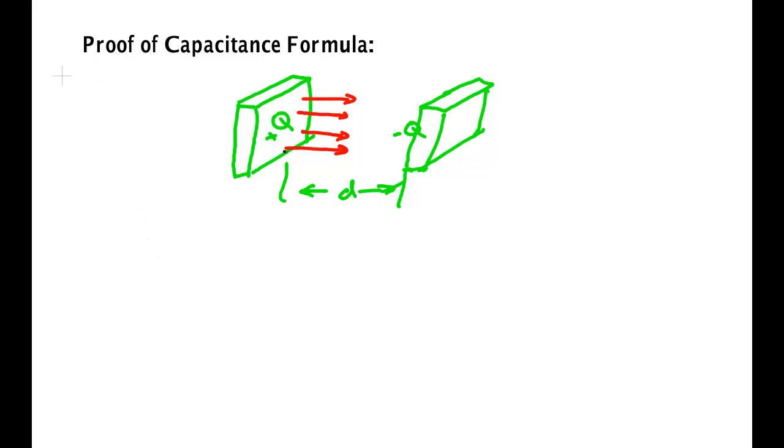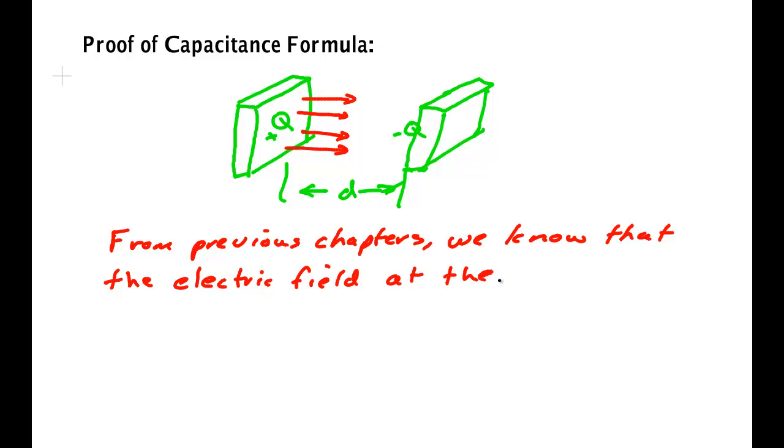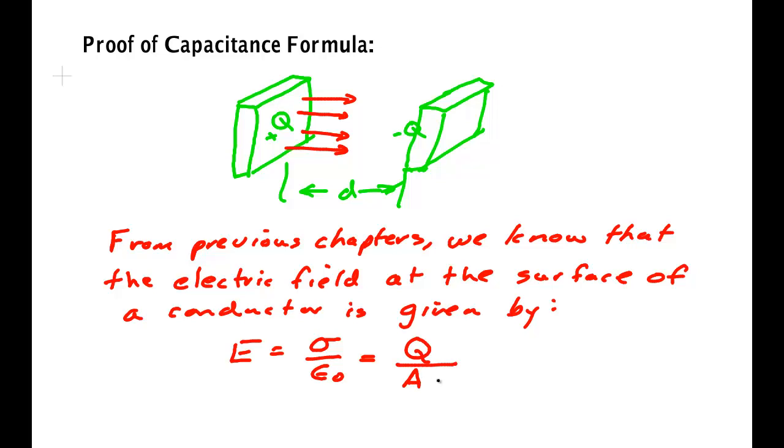Now we know what the electric field is right at the surface of the plate from previous work, previous chapters. We know that the electric field at the surface of a conductor is given by E is equal to sigma over epsilon naught. But sigma is the charge, in this case Q, divided by the area of the plate over epsilon naught. That is something we know for a conductor.